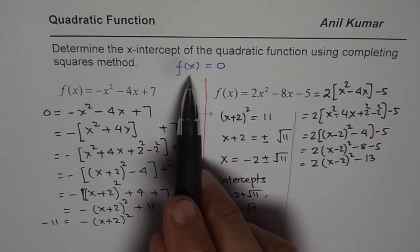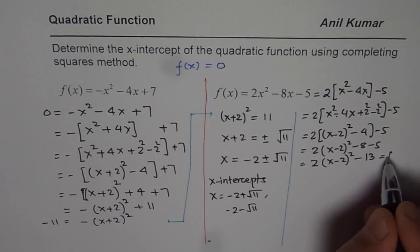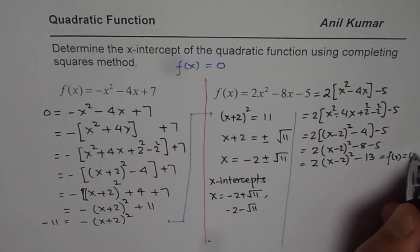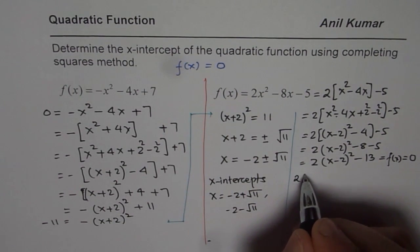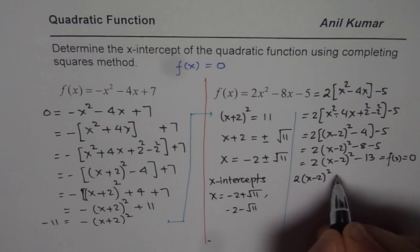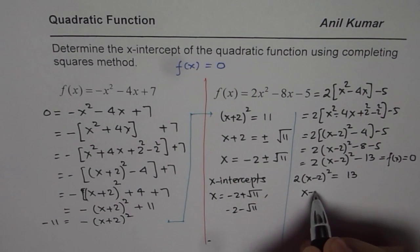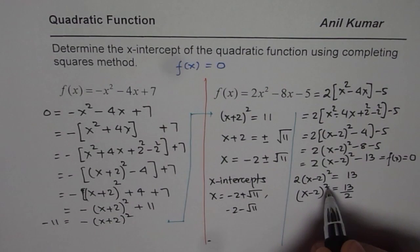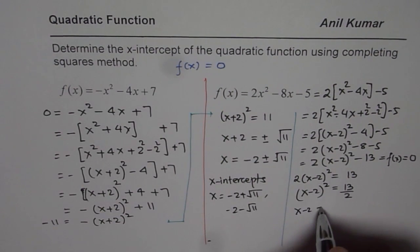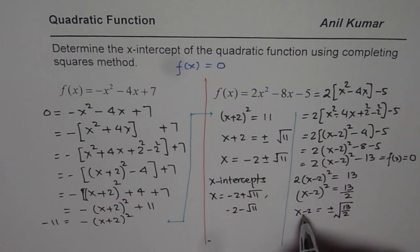Now, since we need to find the x-intercept, we will equate this to 0. So, we say f(x) = 0. That is what x-intercept is. And solve for x. So, we get 2(x - 2)² = 13, taking 13 to the right side. Divide by 2. (x - 2)² = 13/2. Now, square root it. So, we get x - 2 = ±√(13/2). Let's use fractions.